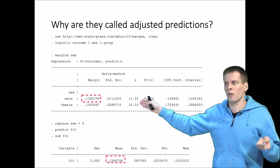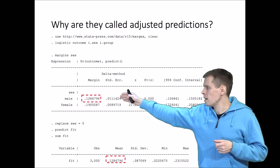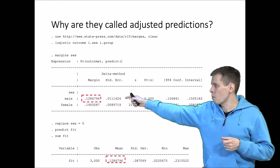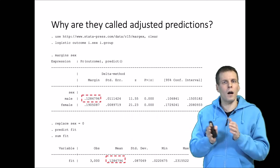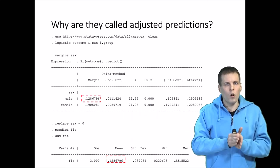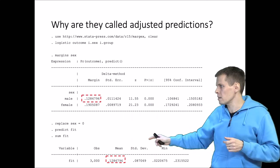The idea here is that the male prediction here using margins is the average prediction under the scenario that all of these observations were men. So this is how you calculate it.